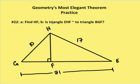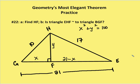Next problem: I need to find HF, and then determine if triangle EHF is similar to triangle BGF. I'm going to label GF as X and HF as Y. The length GE equals 21, so the remaining segment is 21 minus X. I know that X squared plus Y squared equals 10 squared, or 100. Rearranging: Y squared equals 100 minus X squared.